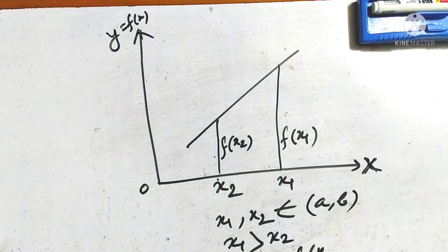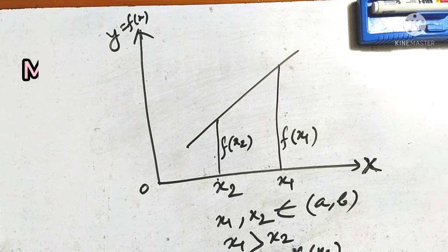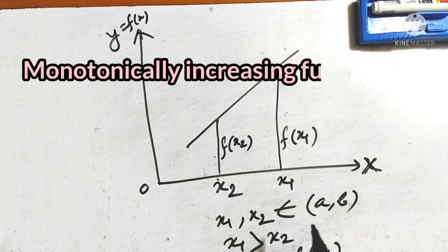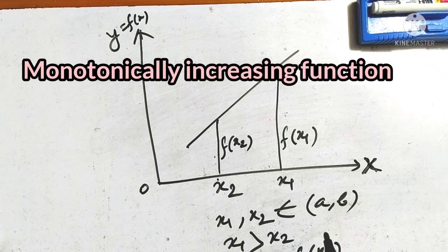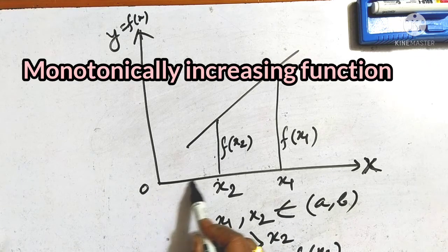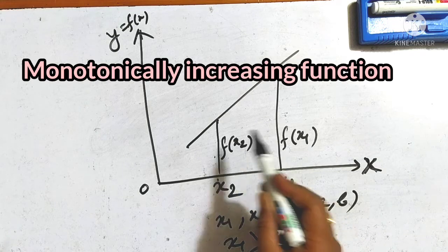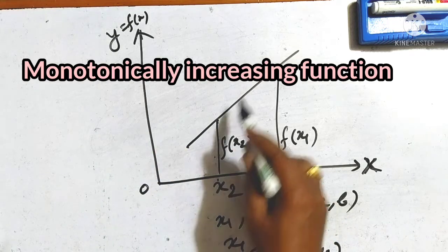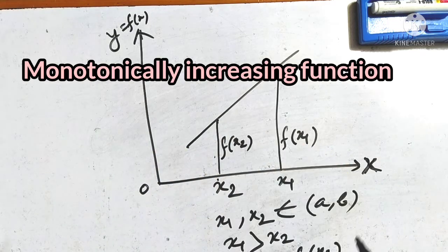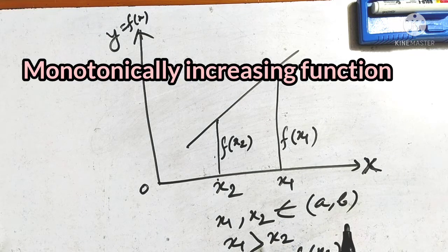If fx1 is greater than or equals to fx2, that is a monotonically increasing function. This is a monotonically increasing function.